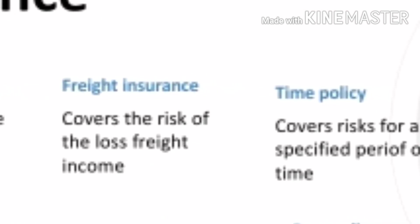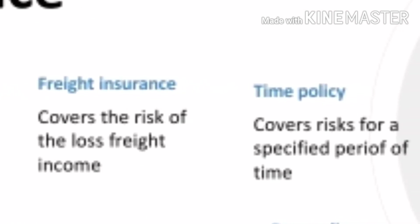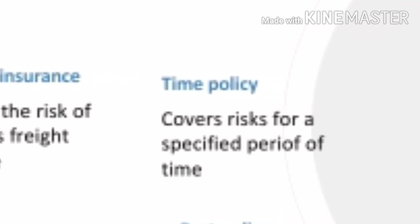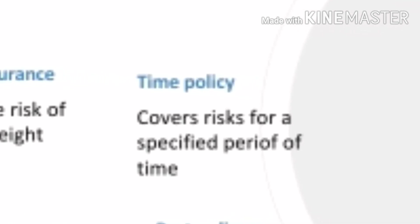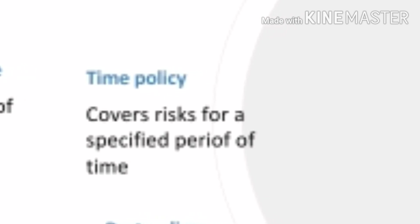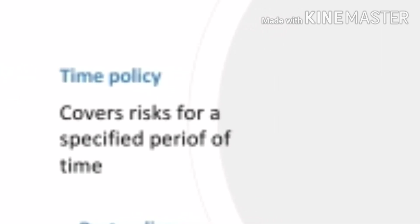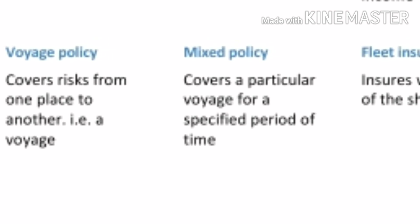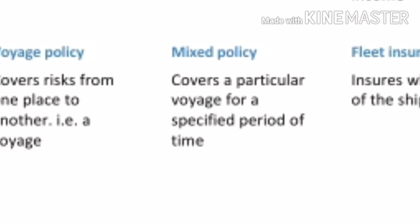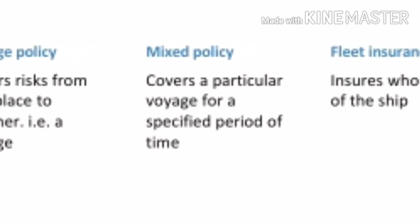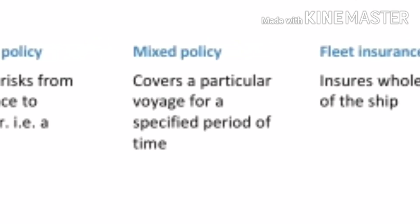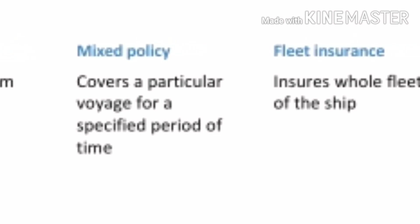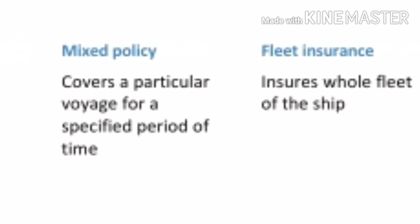Based on the terms and conditions, marine policies can have different variations. One is time policy, which covers the risk for a specified period of time, say a year. Generally hull insurance is issued as a time policy. Next is voyage policy, which covers risk from one place to another, that is a voyage. Generally cargo insurance is issued as a voyage policy.